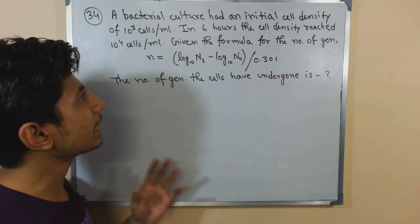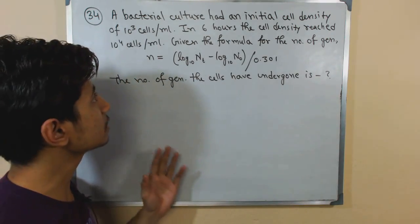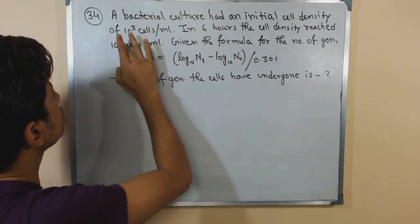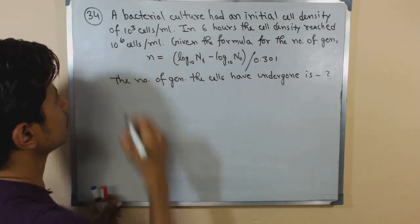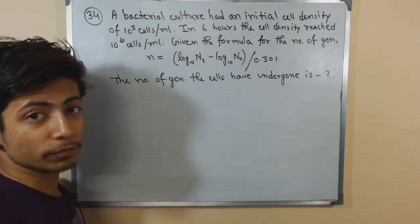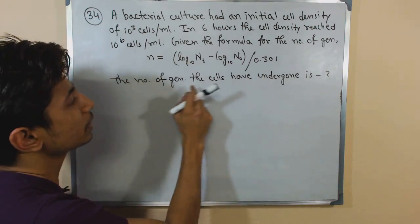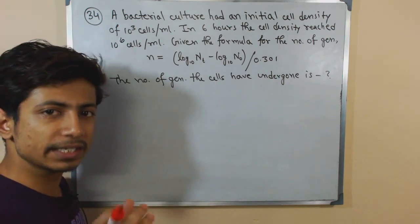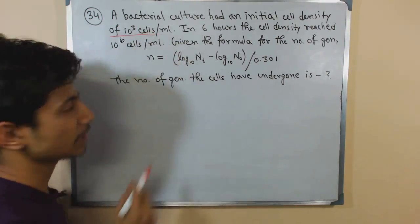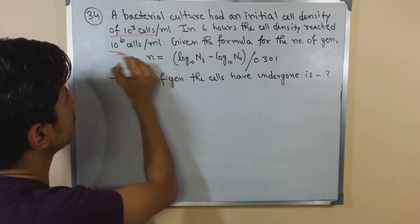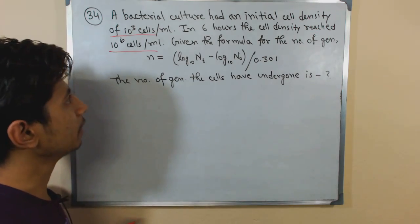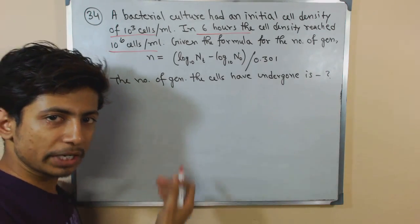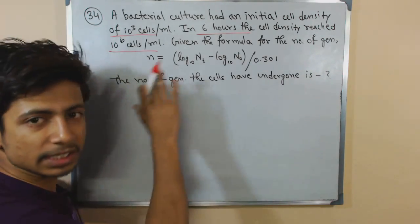Let's begin. A bacterial culture had an initial cell density of 10 to the power 3 cells per ml. In 6 hours, the cell density reached 10 to the power 6 cells per ml. They have given us the starting density of the bacterial cells — that is 10 to the power 3 cells per ml — the ending density of 10 to the power 6 cells per ml, and also the time: 6 hours.